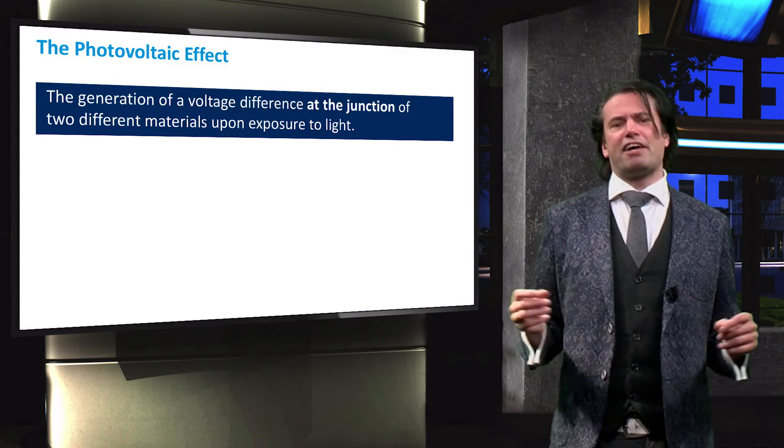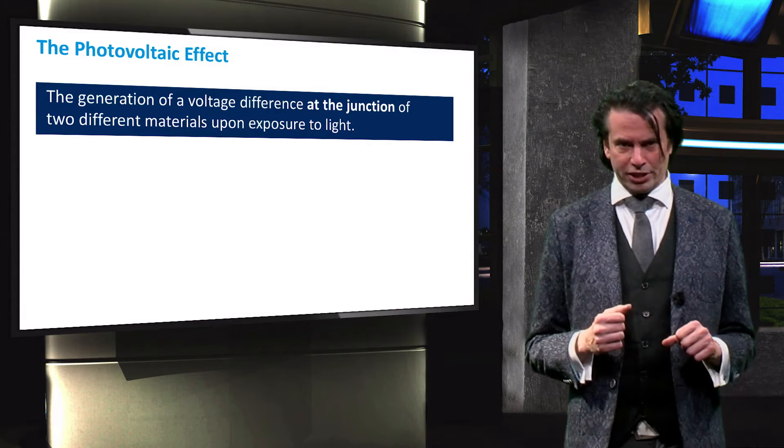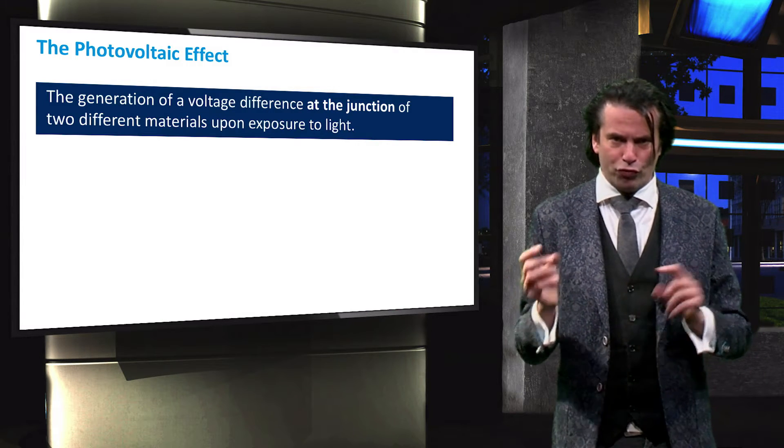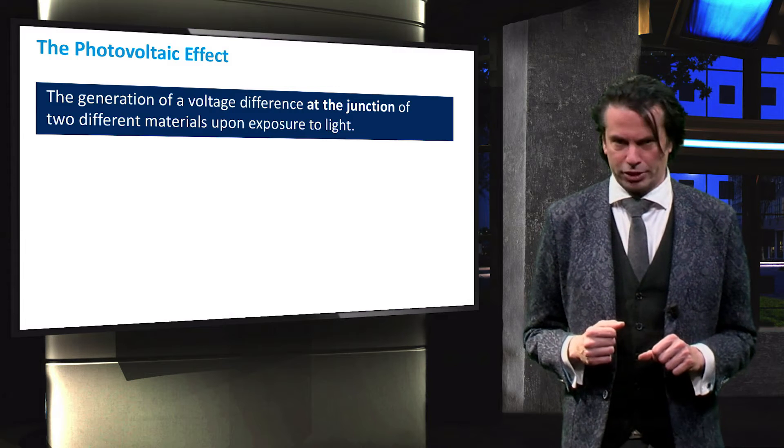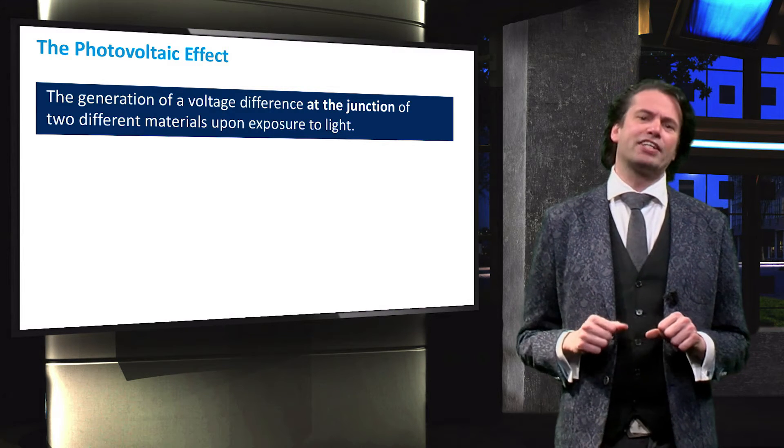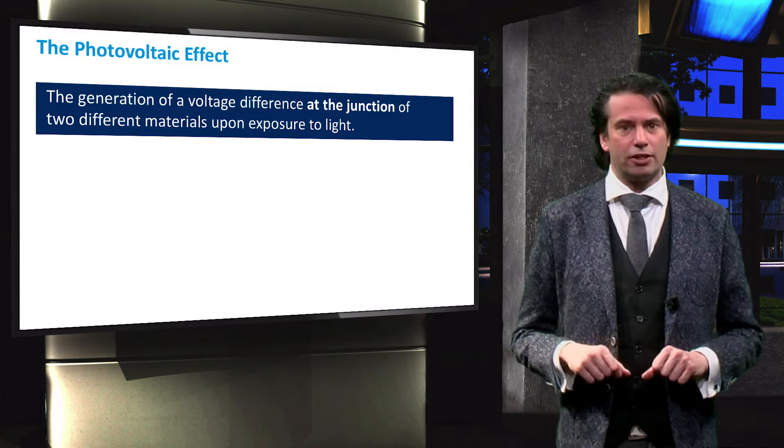The photovoltaic effect occurs through the generation of a potential difference at the junction of two different materials in response to electromagnetic radiation. The photovoltaic effect consists of three distinct processes.